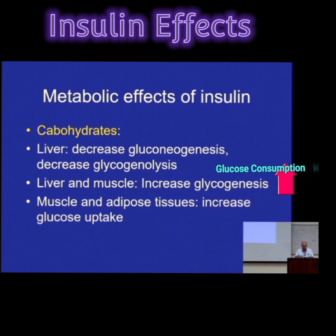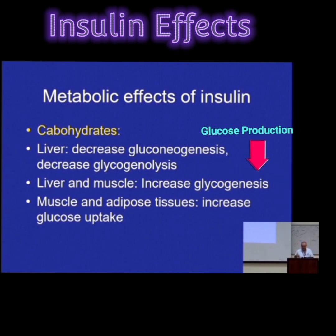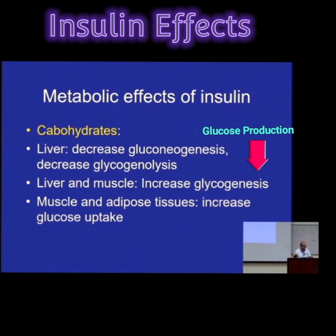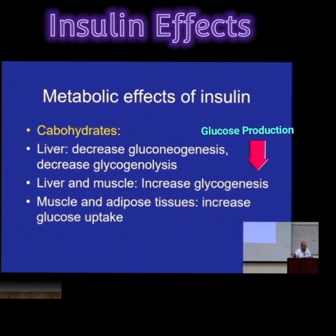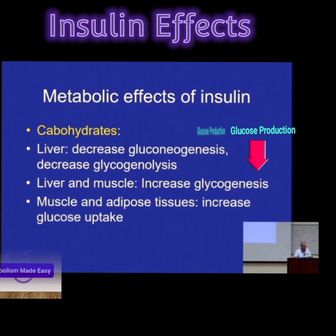The reverse processes — glycogenolysis, which produces glucose, and gluconeogenesis, which also produces glucose from smaller molecules — are inhibited.